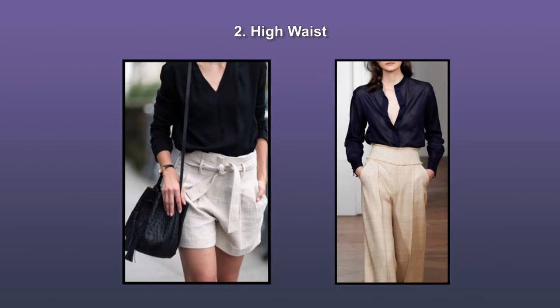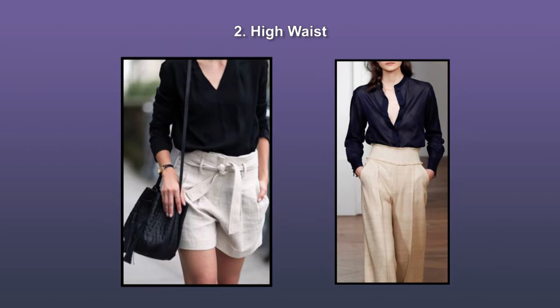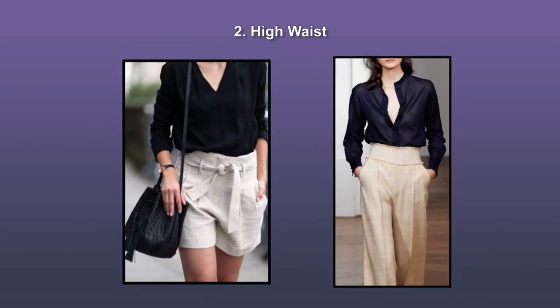High waistline. A high rise or high waisted garment is one designed to sit high on or above the wearer's hips, usually at three inches higher than the navel level. On the left we see a very elegant, chic looking picture of high waisted shorts with a tie-up belt held by belt loops. On the right is a picture from Martin Grant Spring 2016 ready to wear collection. Note the high waisted trouser here.